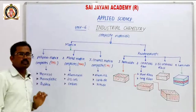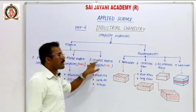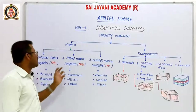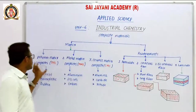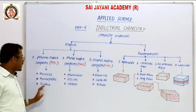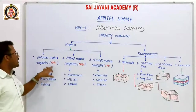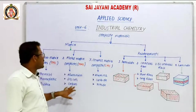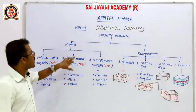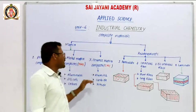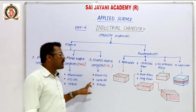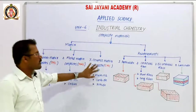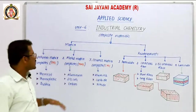For Polymer Matrix Composite (PMC), the polymer used includes thermoset, thermoplastic, and rubber. For Metal Matrix Composite (MMC), metals such as aluminum, silicon, and carbon are used as the base matrix. For Ceramic Matrix Composite (CMC), ceramics such as aluminum nitride and carbon are used. So based on matrix material, there are three types: PMC, MMC, and CMC.